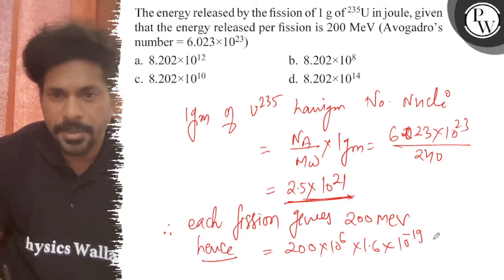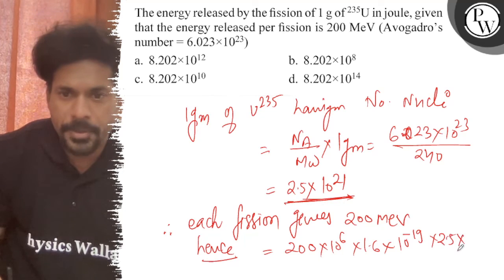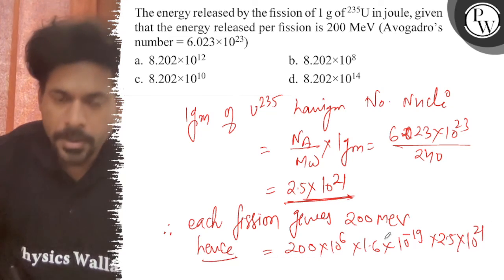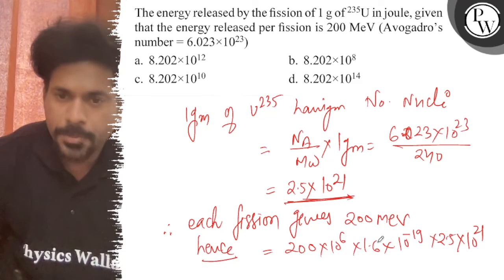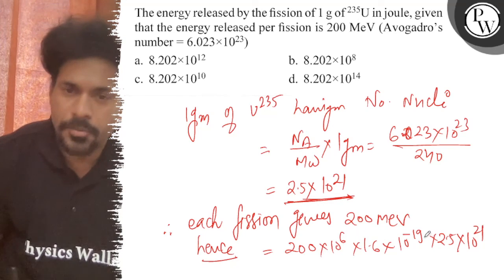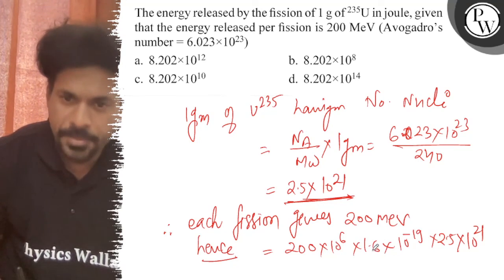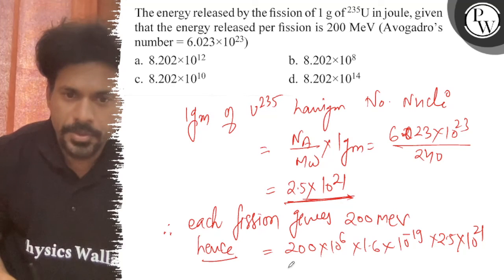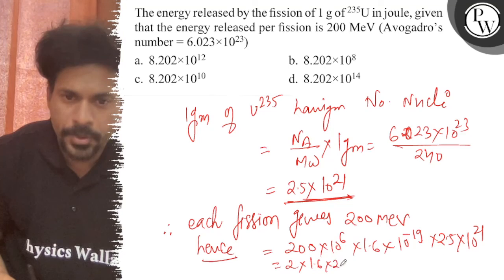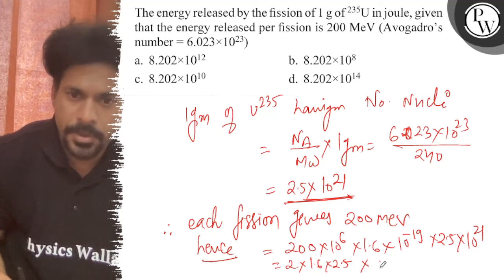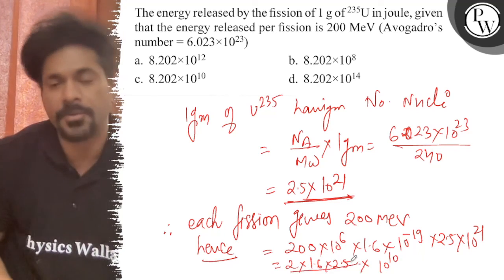...times 2.5 × 10^21. Combining the powers gives 10^8. Then 2 × 1.6 × 2.5 equals 8. So this becomes 8 × 10^10 joules.